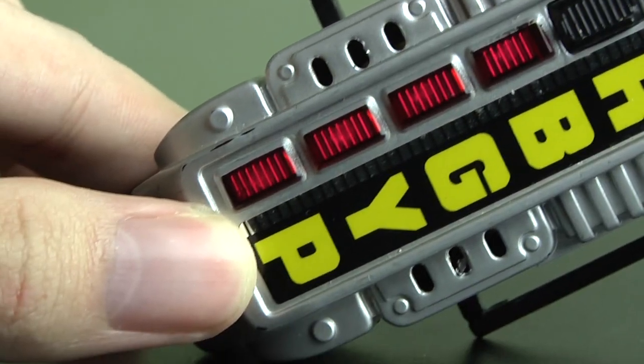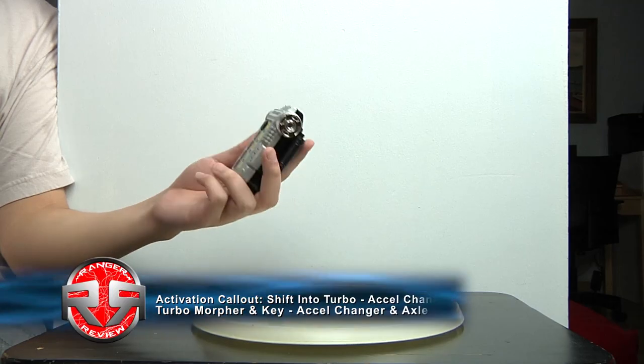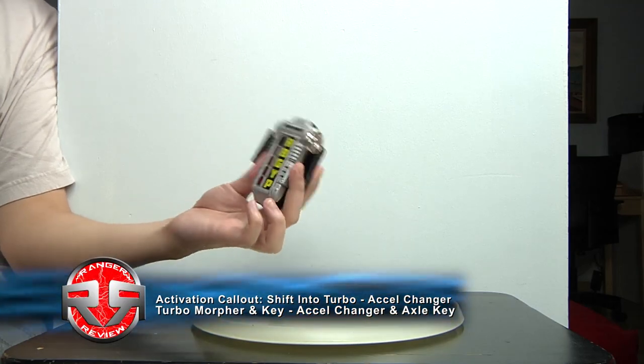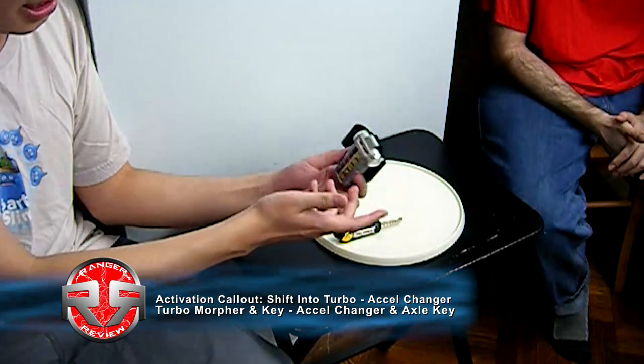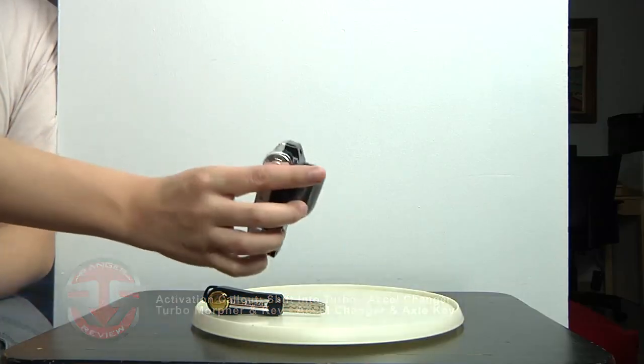First up we have the Turbomorpher. It's a very small little thing. You can actually think of it like a steering wheel kind of thing, or an engine because it kind of looks like an engine block. When you put it on the side it looks like a little handle.